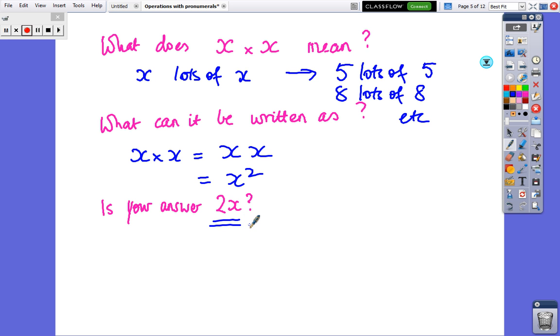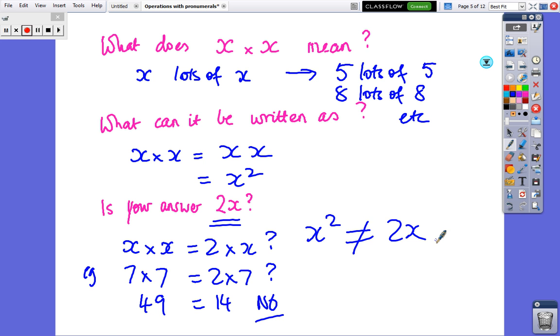Now this last one's a little bit tricky. Is x times x equal to 2 times x? For instance, is 7 times 7 equal to 2 times 7? Which is no, because 49 is not equal to 14. So that means x squared is not the same as 2x. That last idea, that's pretty critical. They're not the same things. Copy that down.